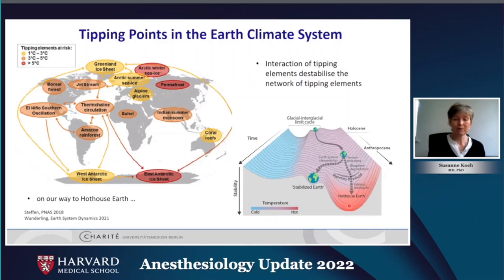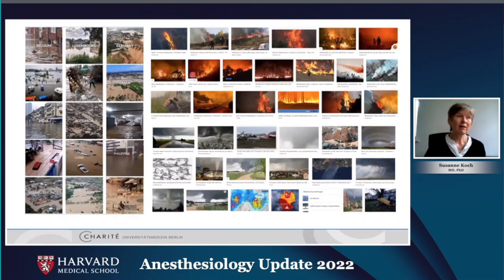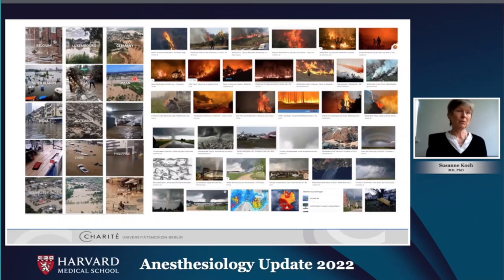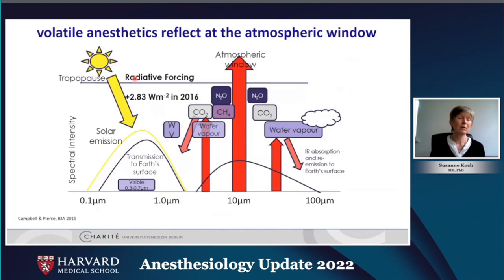The Earth will then look like this: we have tremendous flooding around the world, wildfires and hurricanes — all pictures from last year. In Germany alone, we had a tremendous flooding where over 150 persons died. That is what we will face more frequently if the atmosphere heats up. And now we come to the volatile anesthetics, which also reflect infrared radiation from within the atmospheric windows.